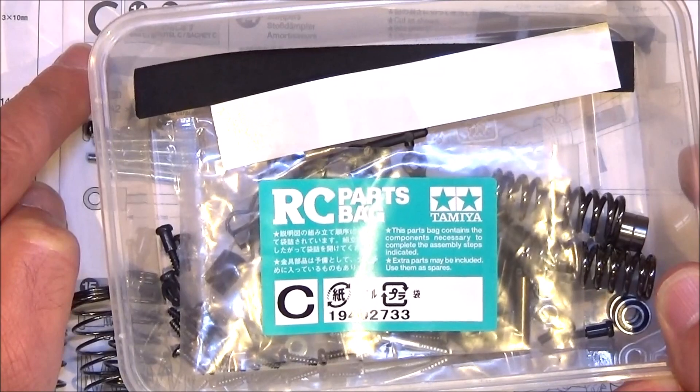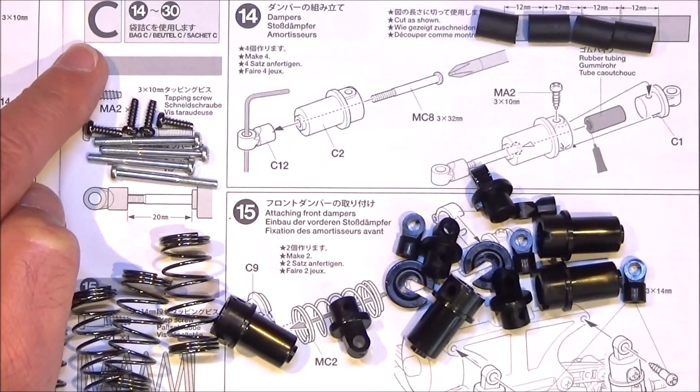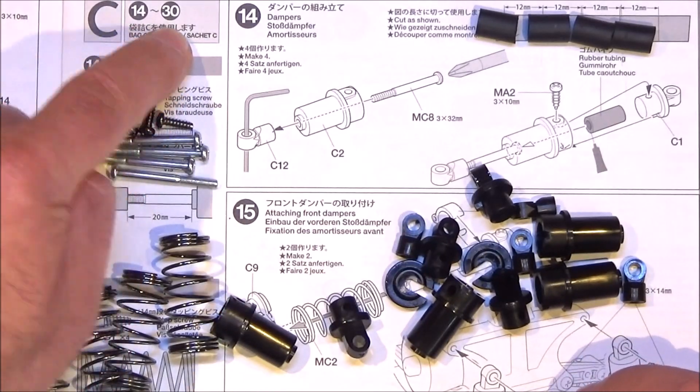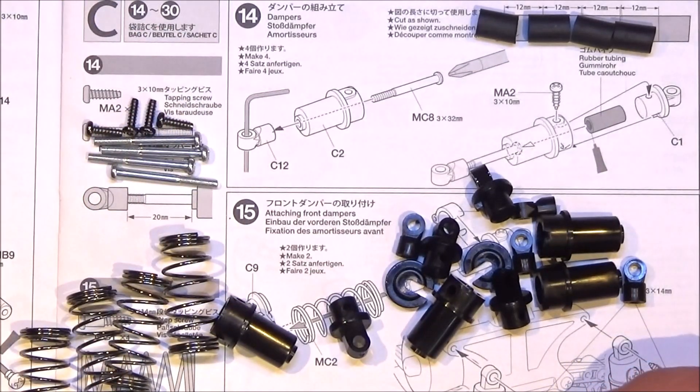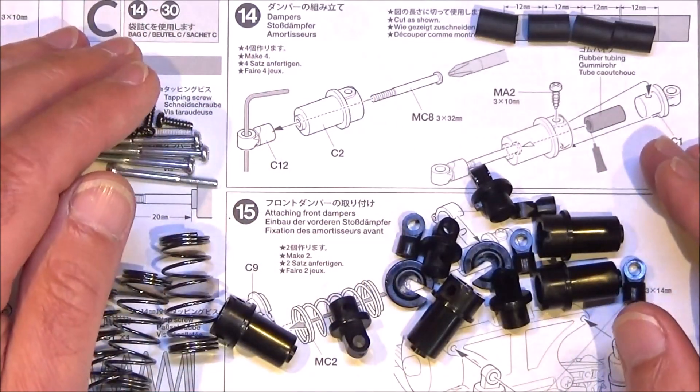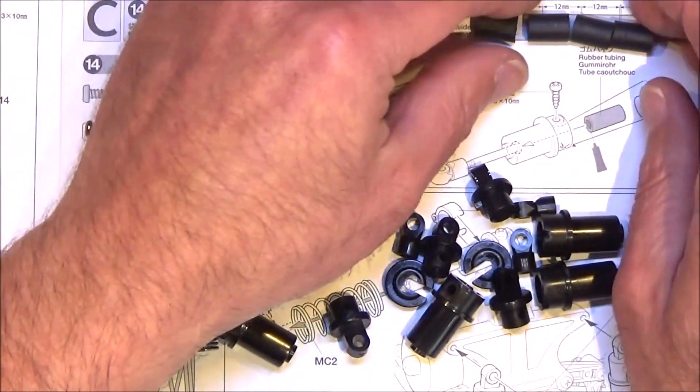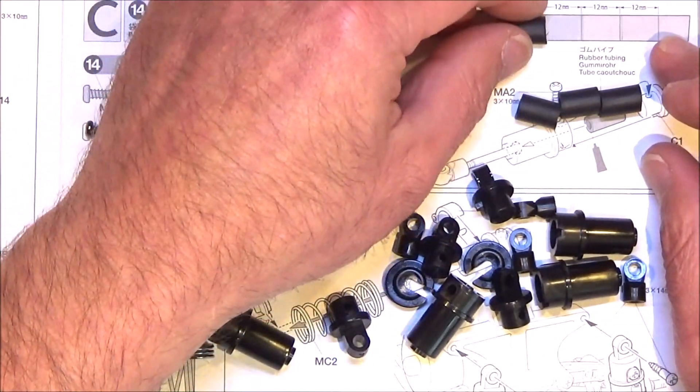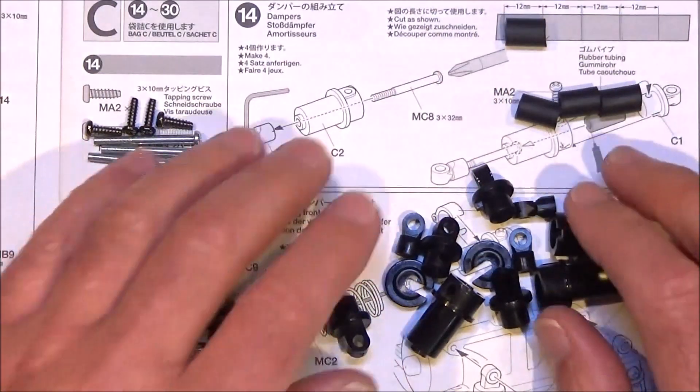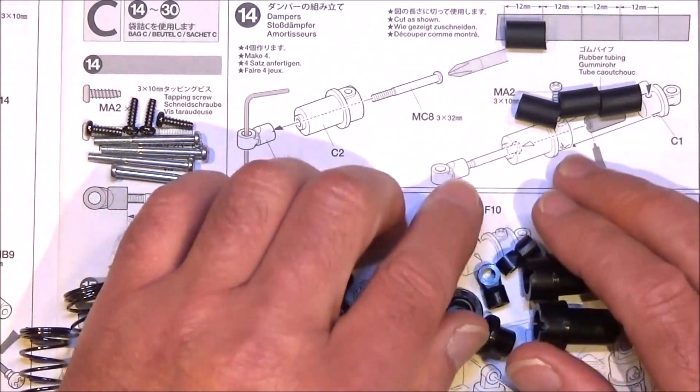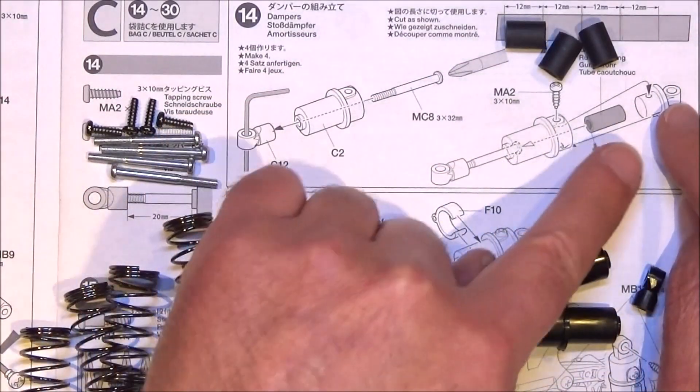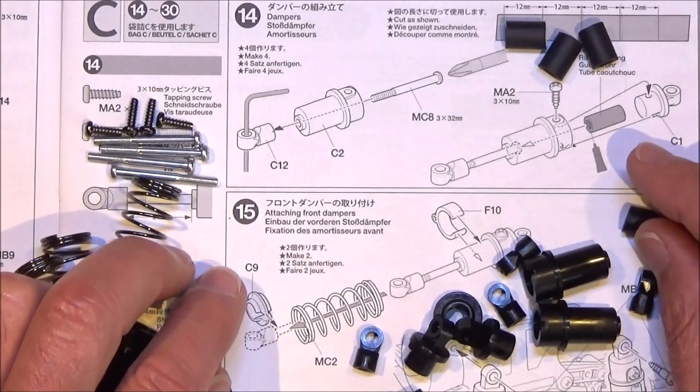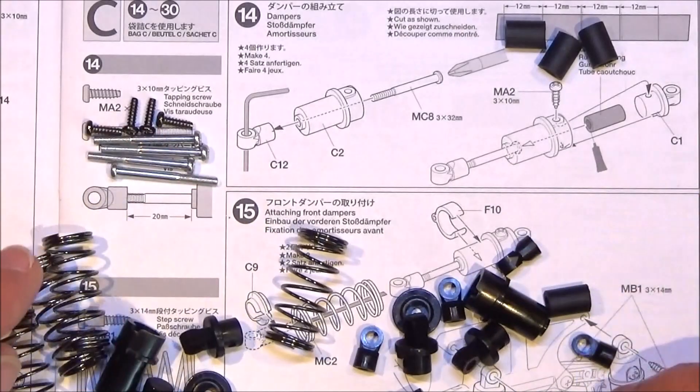Okay then, time to open parts bag C. Parts bag B is finished and onto step 14. We'll go to step 30 with parts bag C. As you can see we're going to build the shocks. They're friction shocks. I've already got the rubber tube and cut that as it shows in the diagram. Just used a hobby knife and cut them to 12mm long. You need to get all your plastic parts ready which are parts C1, C2, C12 and C9.